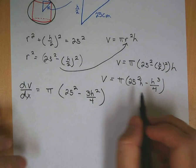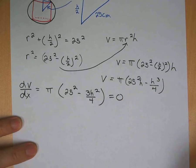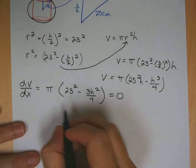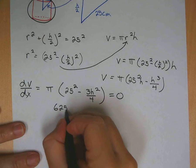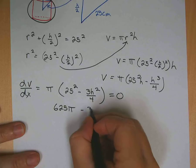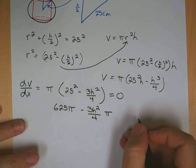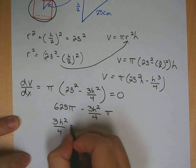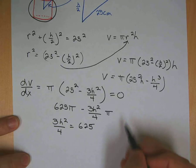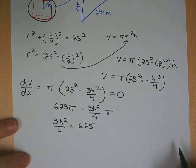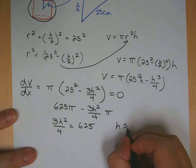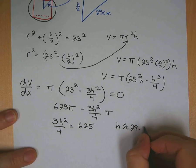To find the critical numbers, we set this derivative equal to 0. So we solve this thing down, we get 625 pi minus 3H squared over 4 pi. That will give us 3H squared over 4 equals 625. The pi's will cancel out when we move this over. So we solve that and we get H is approximately equal to 28.87.